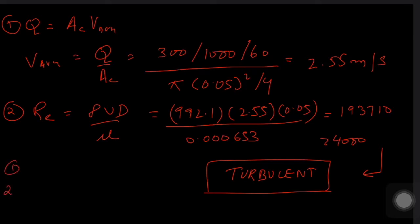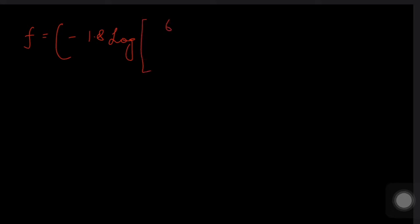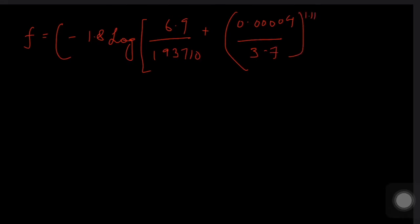Since the flow is turbulent, we use the turbulent friction factor formula. We have two options: the Colebrook equation or the Moody chart. Using the Colebrook equation: f = [−1.8 log(6.9/193710 + (0.00004/3.7)^1.11)]^(−2), the friction factor comes out to be f = 0.016.